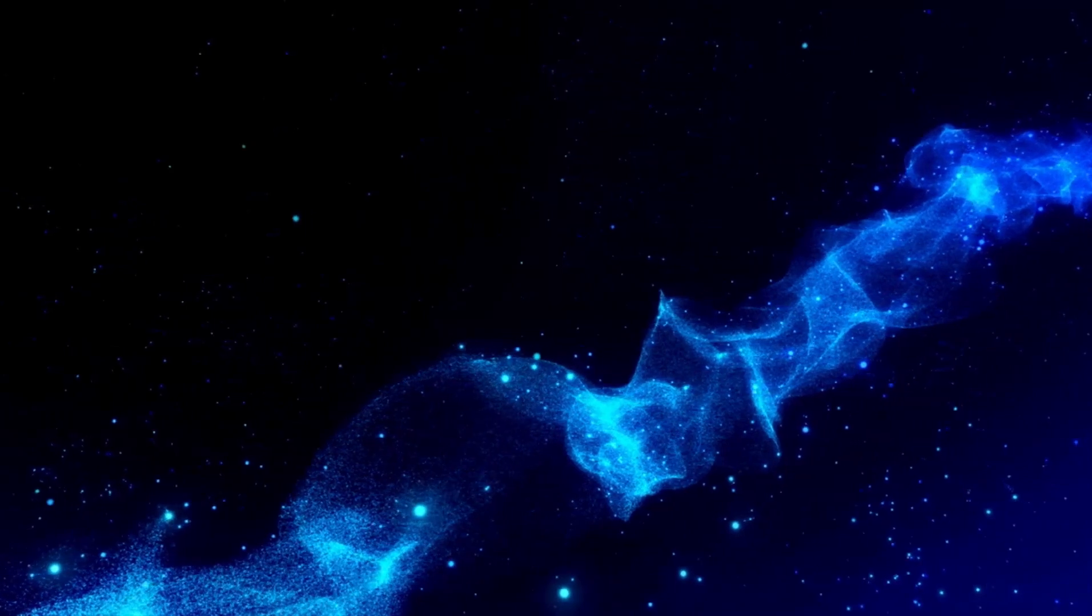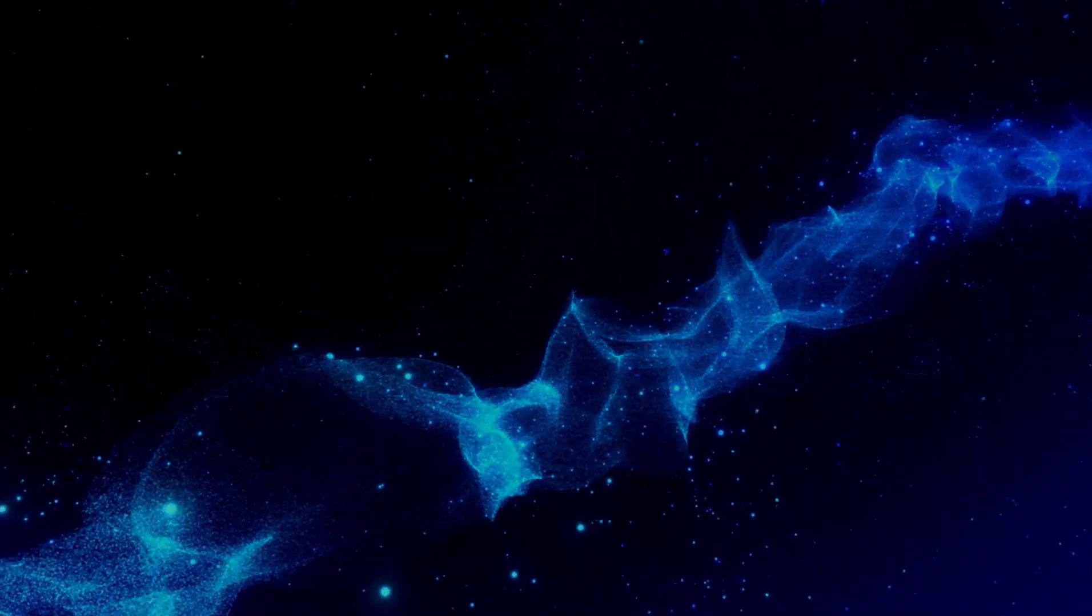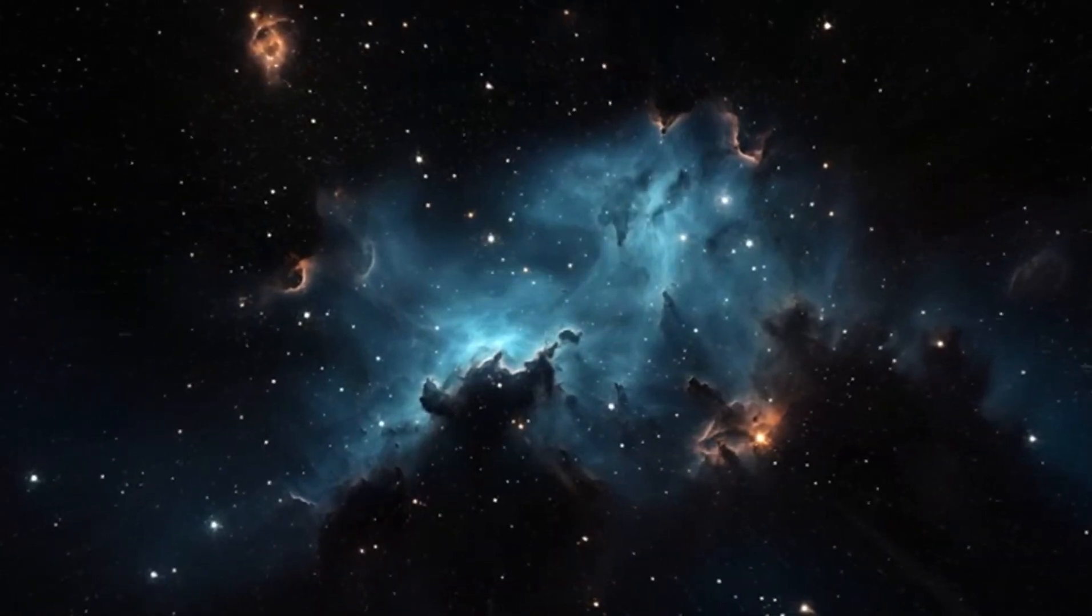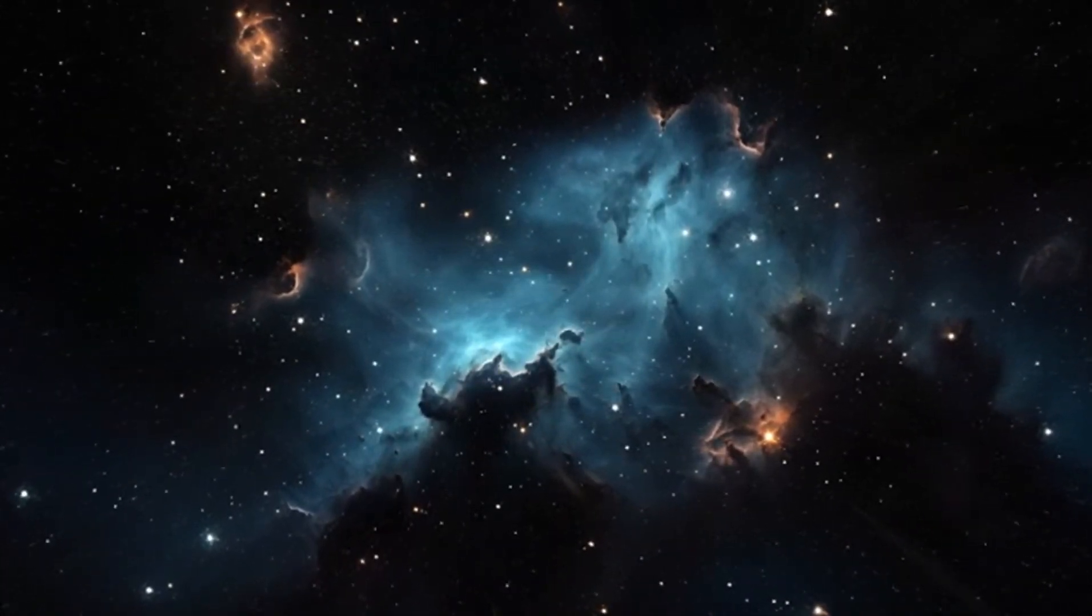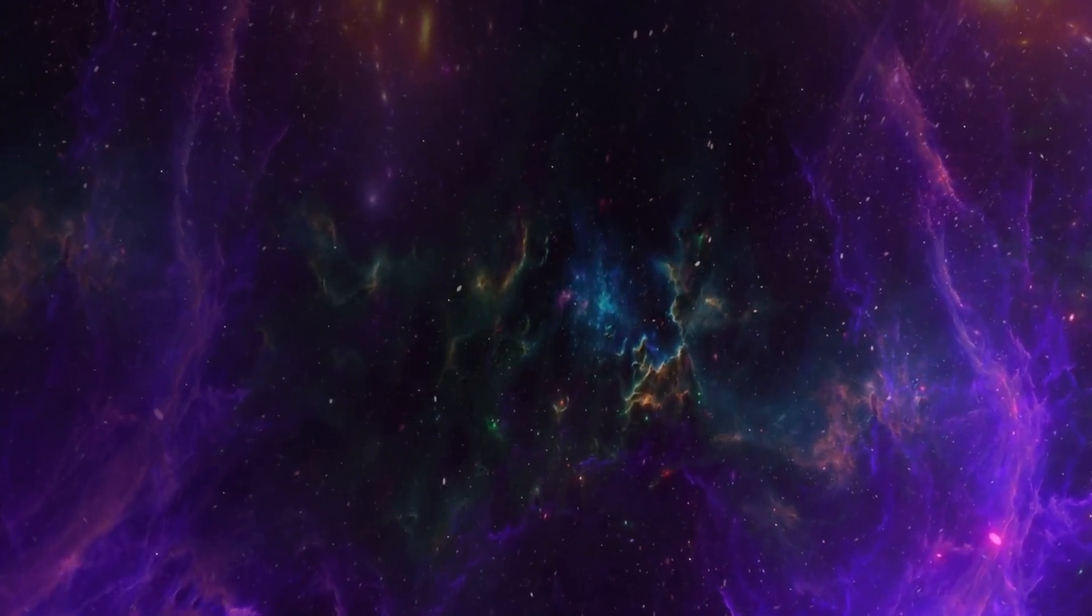Betelgeuse isn't the only red supergiant in our galaxy. Others, like Eta Carinae, might burst into the sky before it does. Statistically, our Milky Way should witness a supernova roughly every 50 years, yet we haven't seen one in the last 400 years.